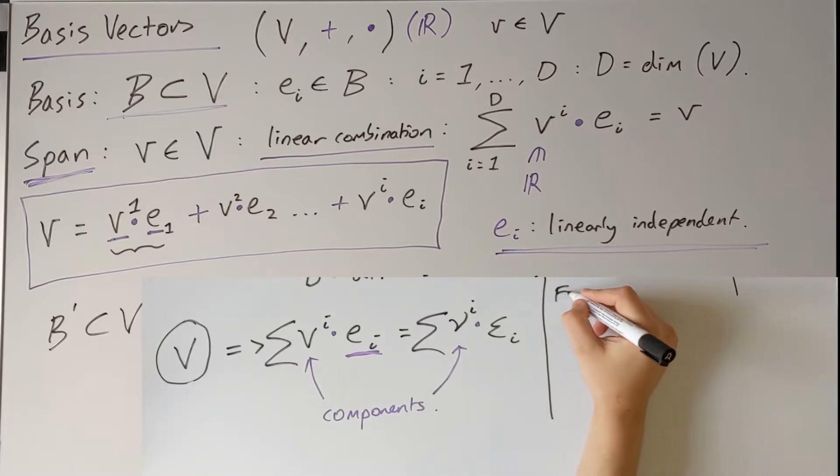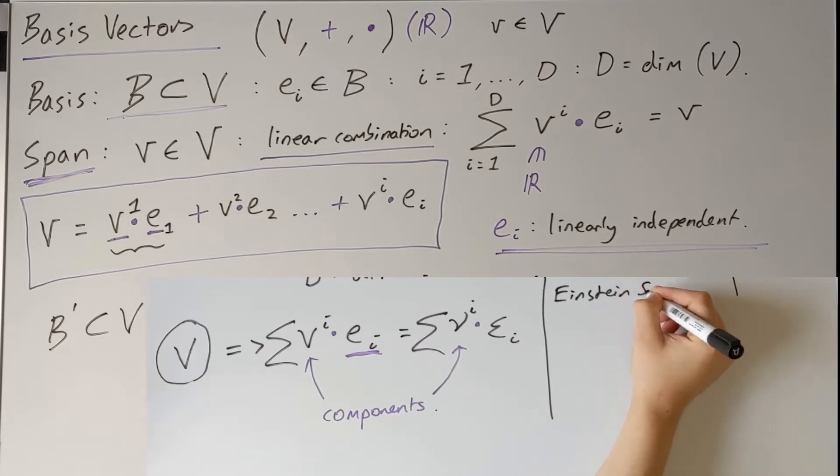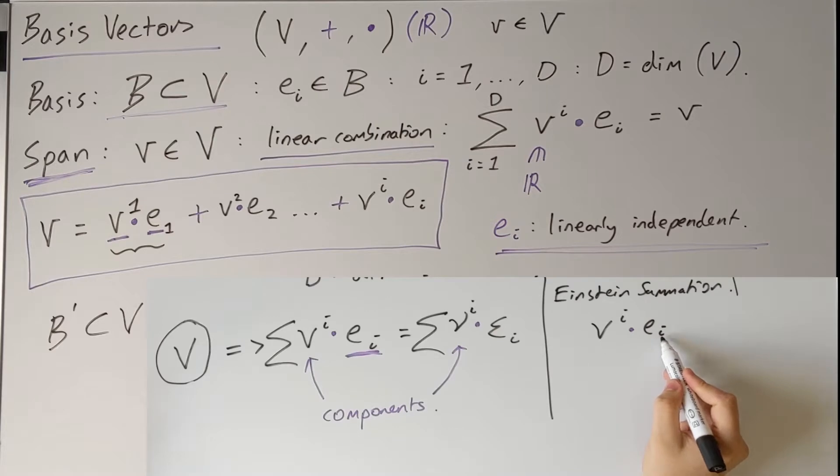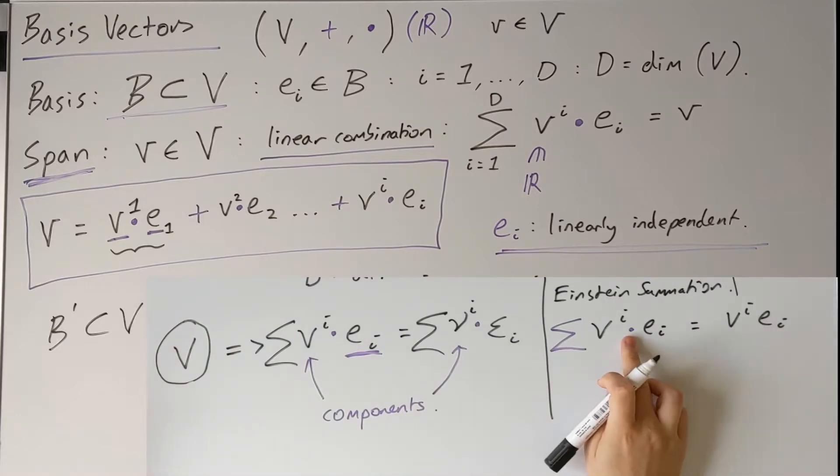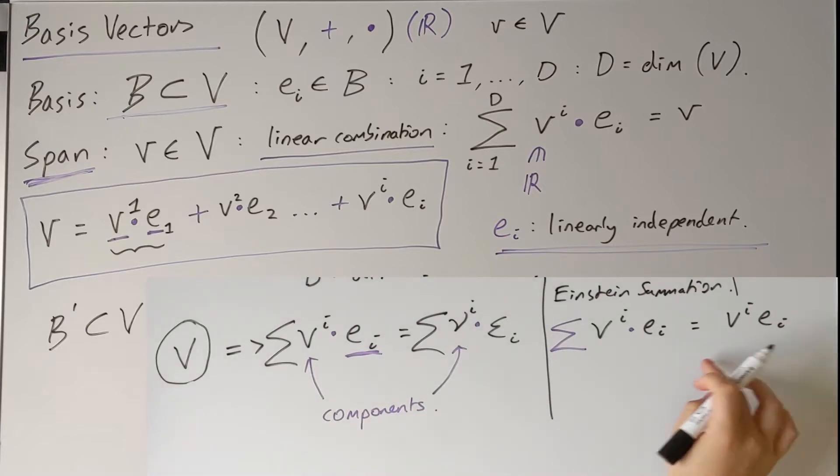So now you'll see that I've been using this sum symbol to denote our linear combination. I'm now going to switch to using the so-called Einstein summation convention. Which states that whenever you see something like v^i e_i, with one index up and one index down, there is an implied summation. And I'll often just drop this scalar multiplication symbol as well, as you should understand from the context what is the basis and what is the component.